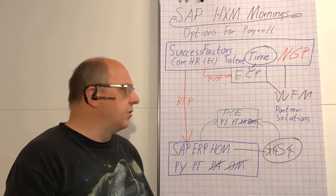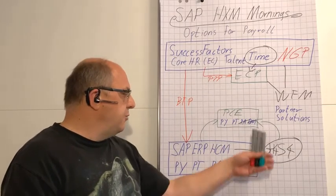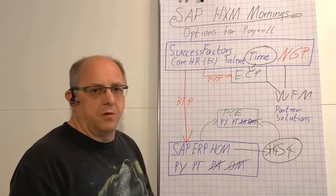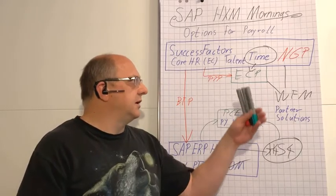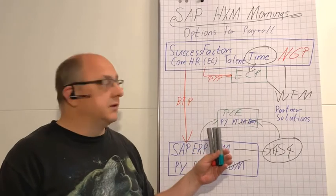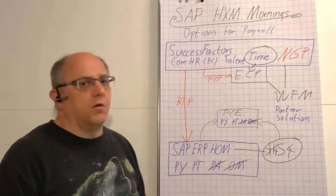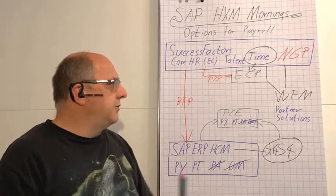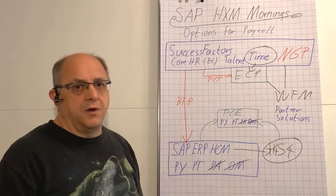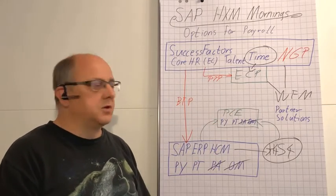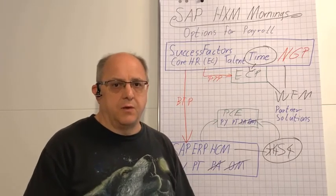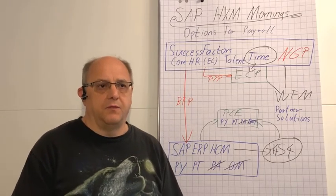That's not saying that there are no constellations where it might make sense to pair with the on-premise solutions, but typically for somebody who's going into this freshly I would say really go full cloud with Employee Central Payroll from the start. Obviously there's always the option to integrate third-party payrolls.